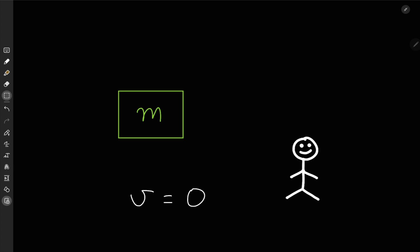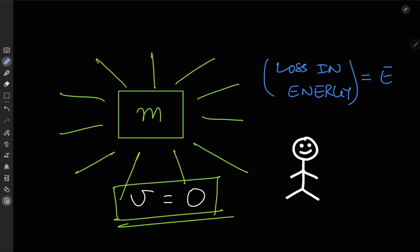After some time, the box emits a burst of radiation having uniform intensity in all directions. Obviously, this doesn't change the momentum of the box, and it's still at rest. However, you do record a decrease in the total energy of the box equal to E. That's the energy of the radiation emitted.